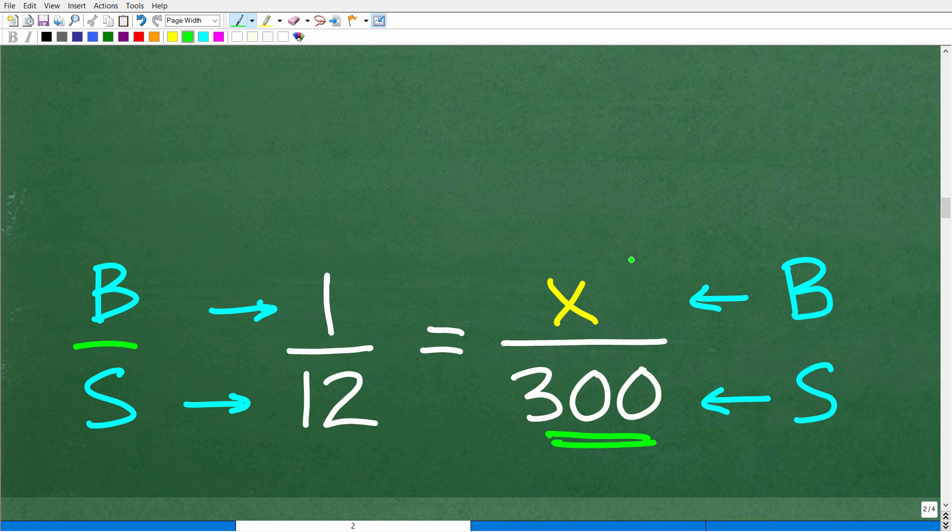We know that the small gear is turning at 300 RPMs. We're looking to determine how many RPMs is the big gear turning when the small gear is going 300 RPMs. We do know that whatever the answer is for the big gear, it's in proportion to the gear ratio of one to 12. Hopefully that makes sense.